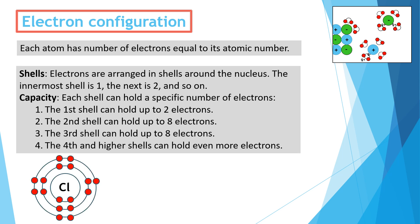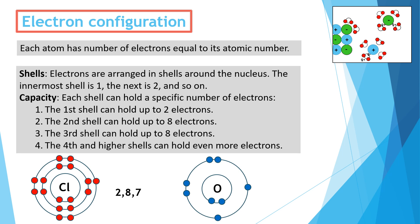Once I know that, I can use the following rule: electrons are arranged in shells around the nucleus, with the innermost shell called shell one, the next shell two, and so on. Shell one can hold two electrons, shell two can hold eight, shell three can hold eight, and shell four holds the rest. For chlorine with 17 electrons: two in the first shell, eight in the next, and seven in the third — written as 2,8,7.